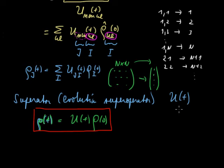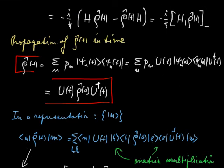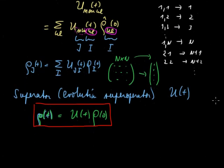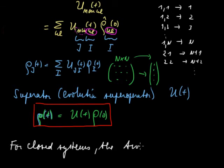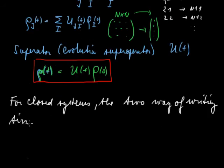Now, for a closed system, both descriptions by the super operators, that is by a matrix with four indices, or if you want by a matrix with two super indices, both these approaches, this one and the one where I just multiply from left and right with normal evolution operators, both are equivalent for closed systems. So this is very important. For closed systems, the two ways of writing time evolution are equivalent.